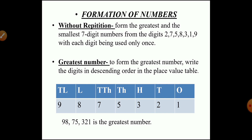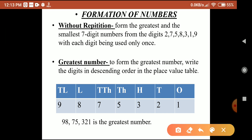First, we discuss without repetition, by which we form two kinds of numbers: the greatest and the smallest seven-digit number. Here are seven random digits: 2, 7, 5, 8, 3, 1, and 9. We use each digit only once, so we cannot repeat any digit at any time.